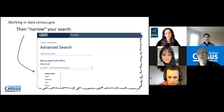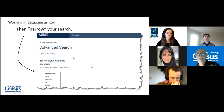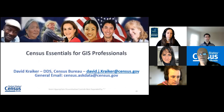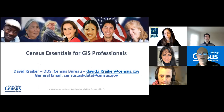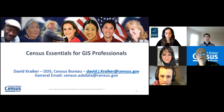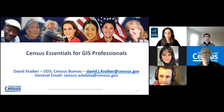I will quickly go into data.census.gov before we have the breakout rooms. The key is starting with Advanced Search. You have the option of going the easy way, but the portal then makes decisions for you. If you go the advanced route, you get a filters panel where you can start filtering and exploring the data.